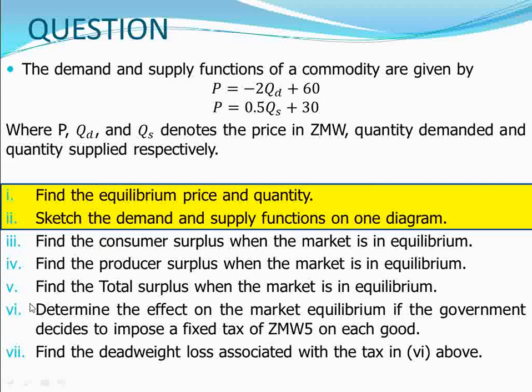In part one I'll focus on finding the equilibrium price and quantity, as well as sketching the demand and supply functions. In part two we will find the consumer surplus, producer surplus, and total surplus. In part three we'll determine the effect on market equilibrium if the government imposes a tax of five Kwacha, and we'll also find the deadweight loss. So join me as I present part one and part two solutions.